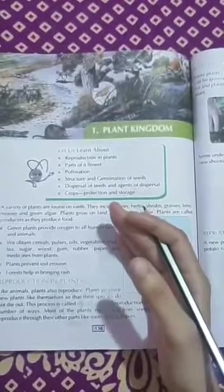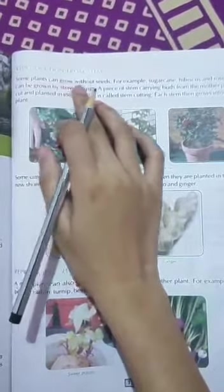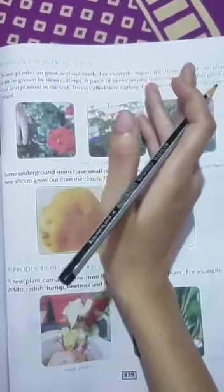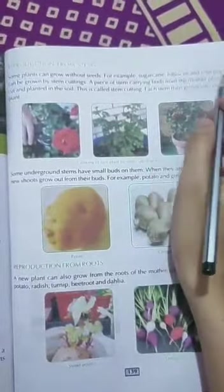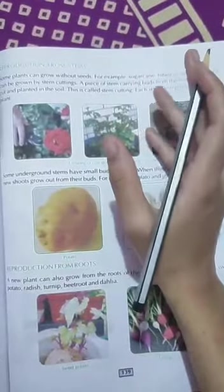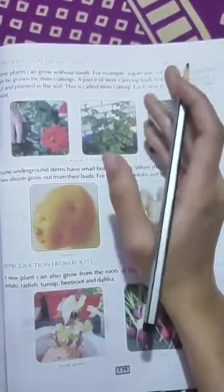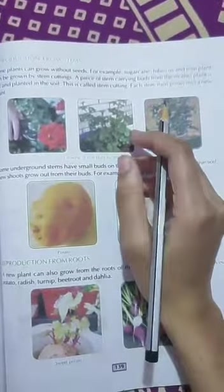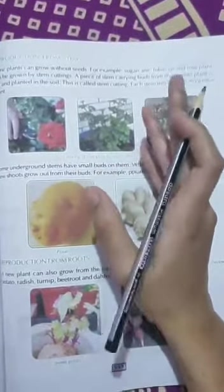First one is reproduction from stems. Some plants can grow without seeds. Some plants grow without seeds. For example, sugarcane, hibiscus and rose plants can be grown by stem cutting. We take a stem piece from the mother plant which has buds, and grow it in soil. This is called stem cutting. Then each stem grows into a new plant.